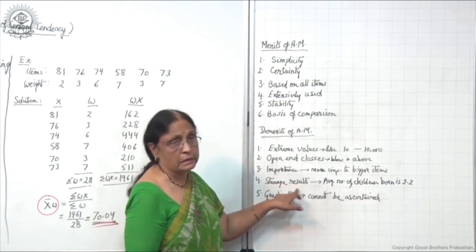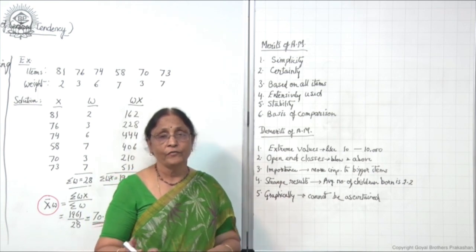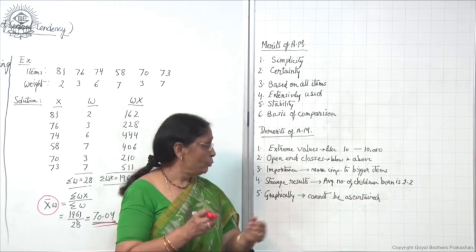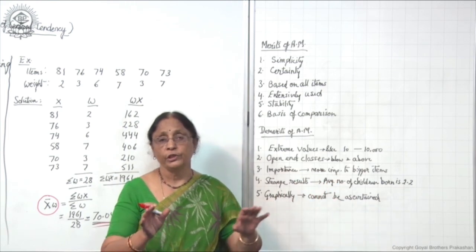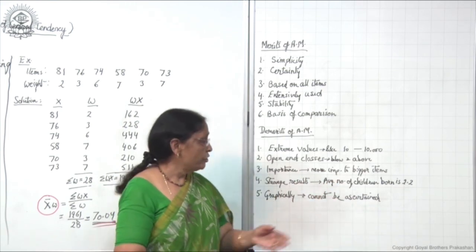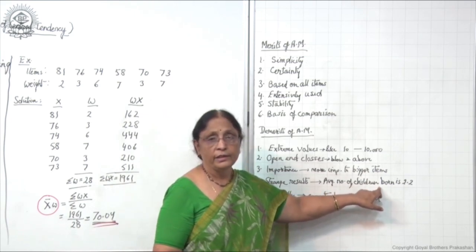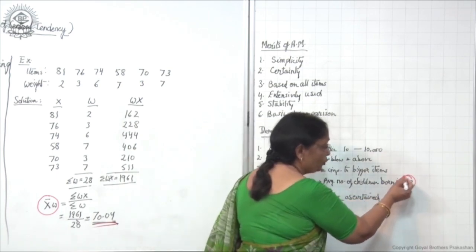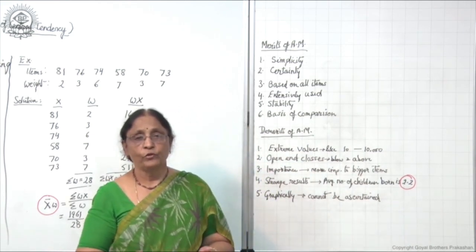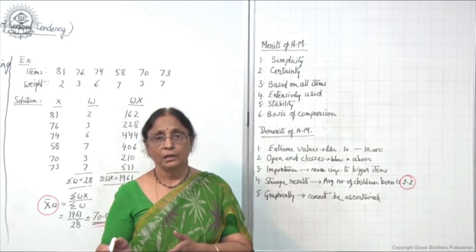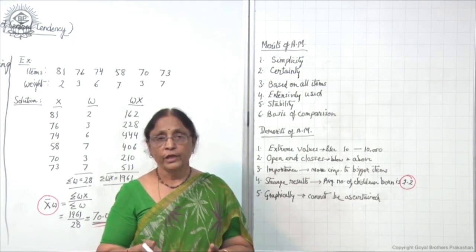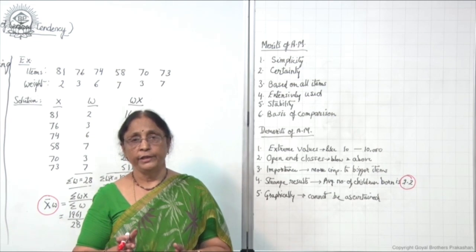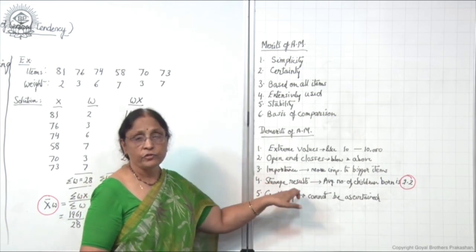The fourth demerit is strange results. Sometimes the results after calculation are very funny or strange. For example, suppose you are calculating the average number of children born in a particular area in a year, and the answer you get is 2.2. Now, children cannot be in the form of 2.2 — it may be 1, 2, 3, or 4. So 2.2 is misleading, and in certain cases it gives strange results.